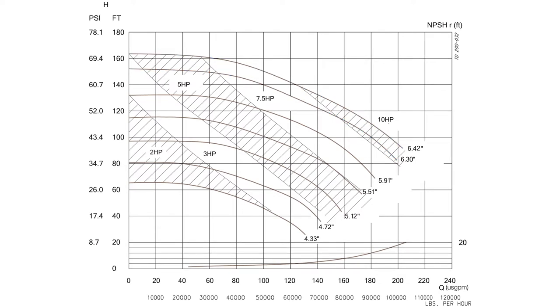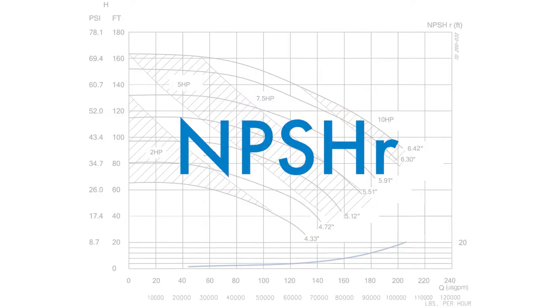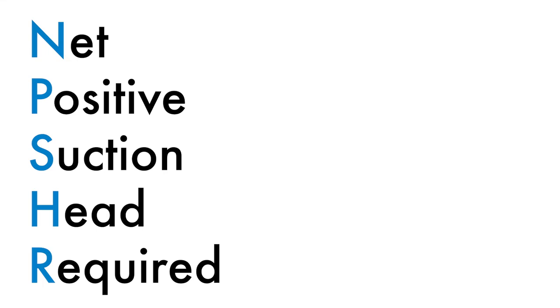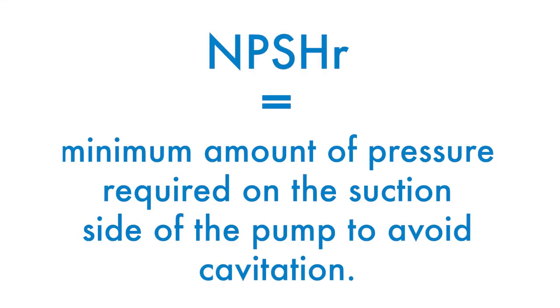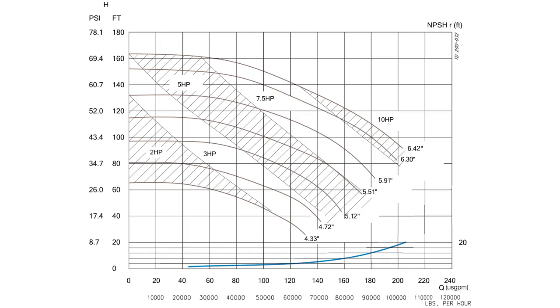In addition to standard PSI and flow, the curve at the bottom of the grid indicates NPSHR, which stands for Net Positive Suction Head Required. NPSHR is the minimum amount of pressure required on the suction side of the pump to avoid cavitation. NPSHR is determined by the pump, as each one is different.